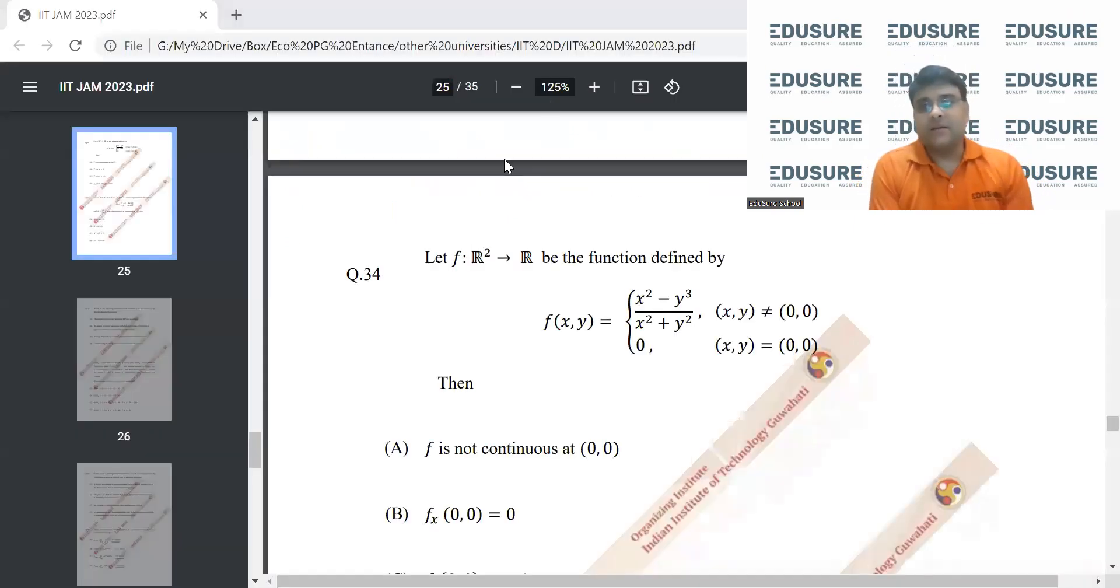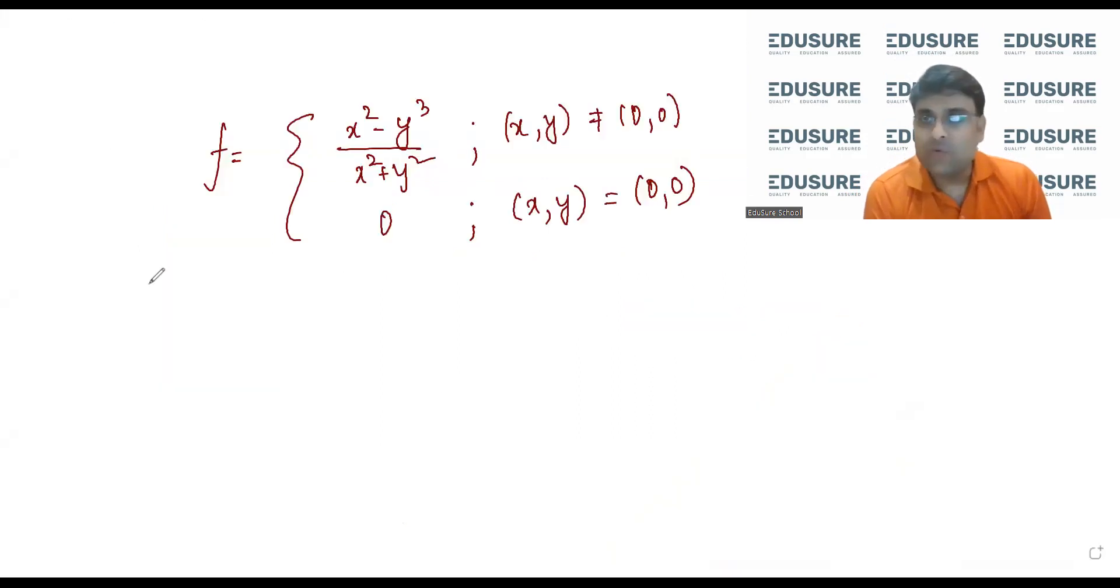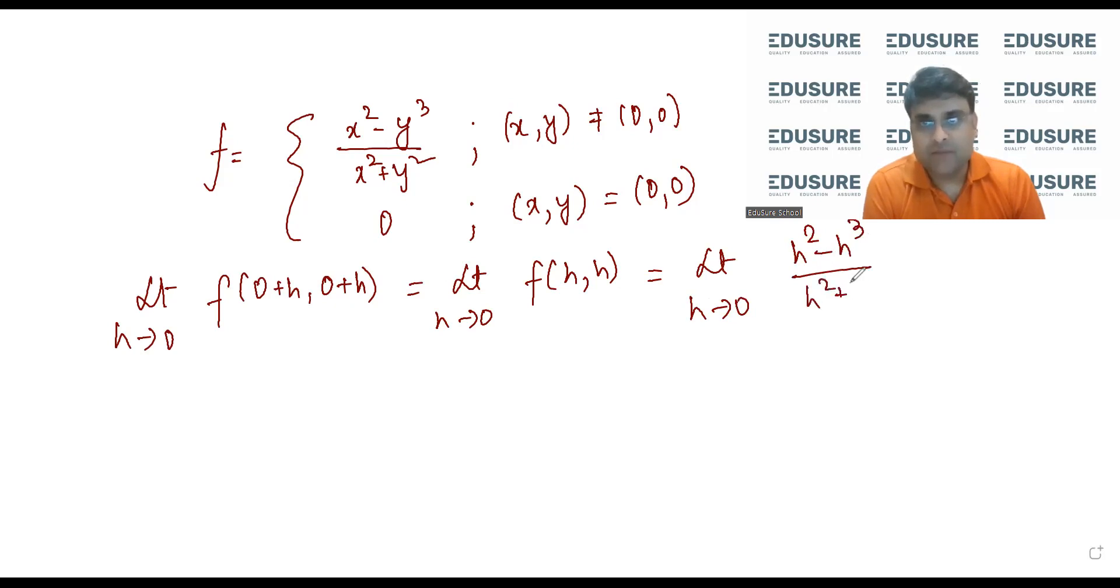Now for continuity, what we need to do is we need to find out limit h tends to 0, f of (0 plus h, 0 plus h). This will give us the right hand limit. So limit h tends to 0, h square minus h cube by h square plus h square. I divide up and down by h square: 1 minus h by 1 plus 1. This comes out to be 1 by 2.